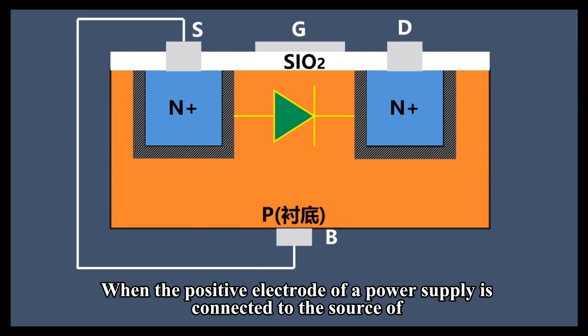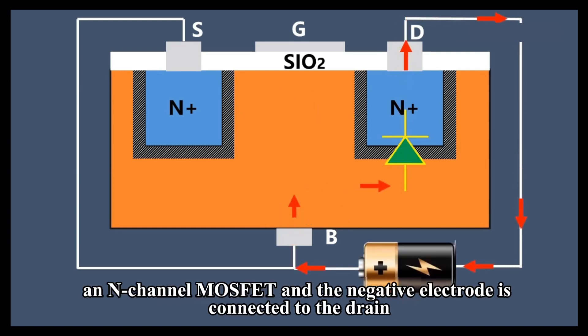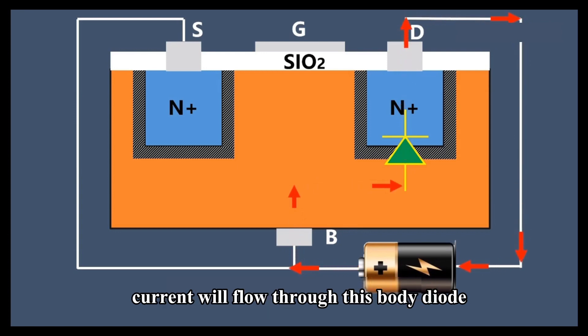When the positive electrode of a power supply is connected to the source of an N-channel MOSFET and the negative electrode is connected to the drain, current will flow through this body diode.